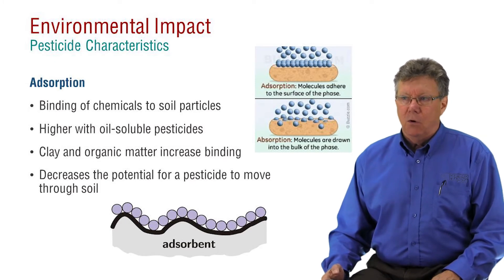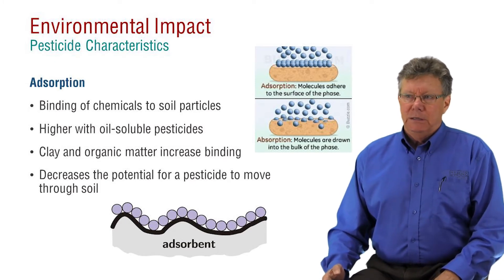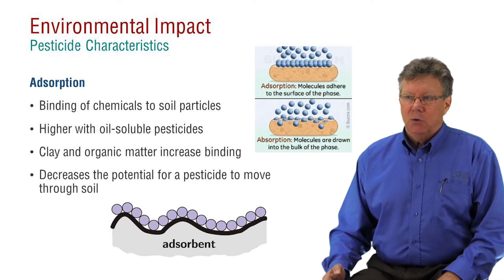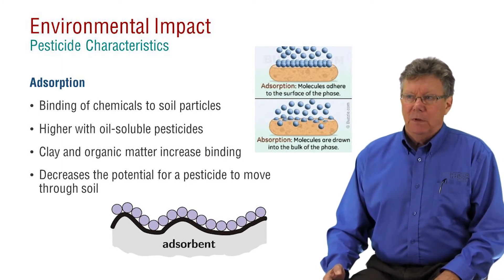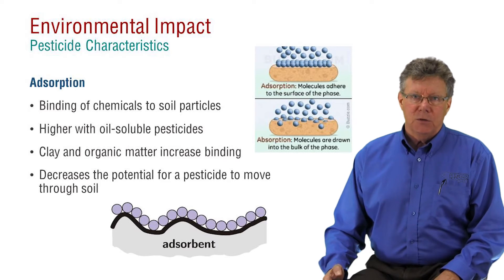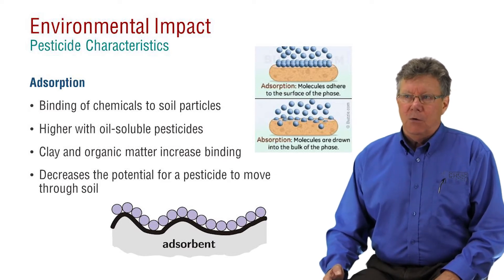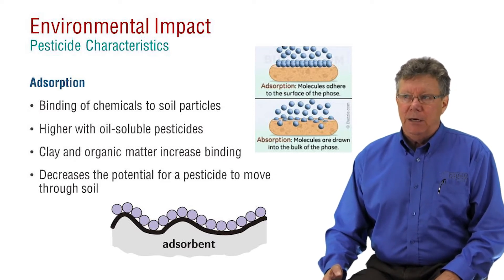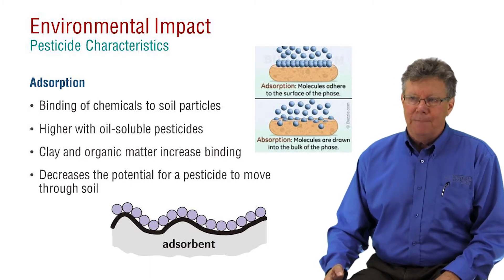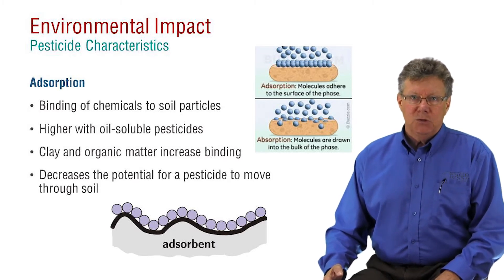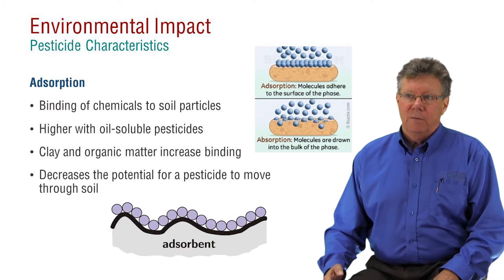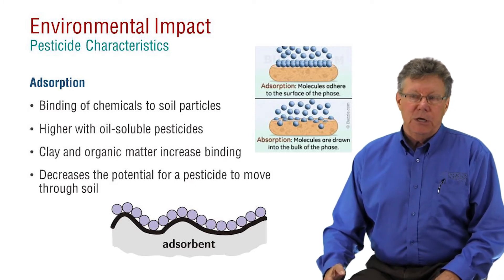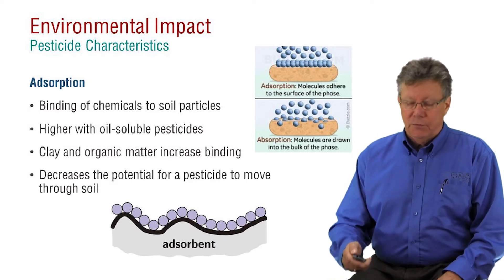Pesticides that are oil-soluble or oil-loving tend to adsorb or bind to soil particles. Soil type is a key factor as to how much chemical is held by the soil particles. Clay and organic soils have many binding sites and adsorb a lot of pesticide. If pesticide is adsorbed or bound to the soil, it doesn't move freely with soil water and water contamination concerns are then greatly reduced.